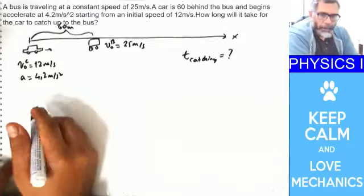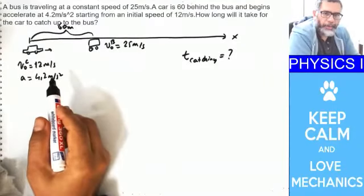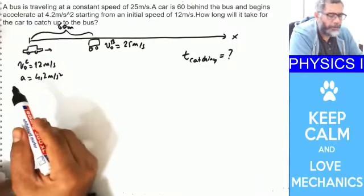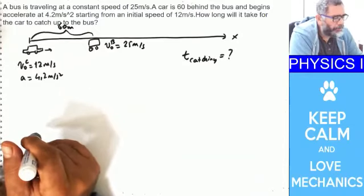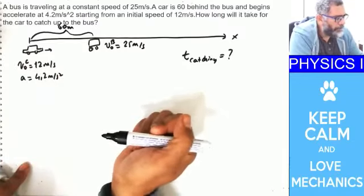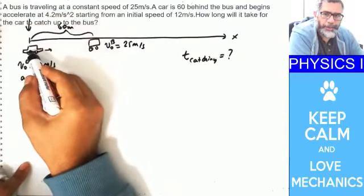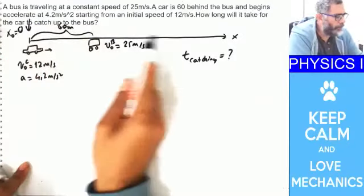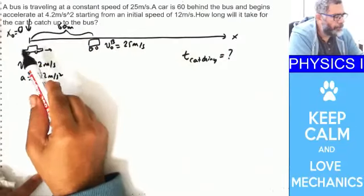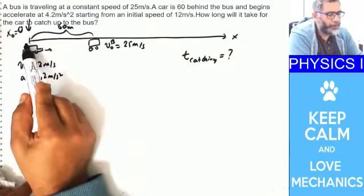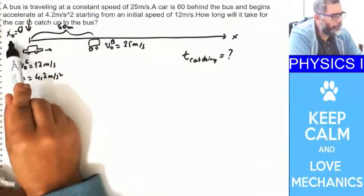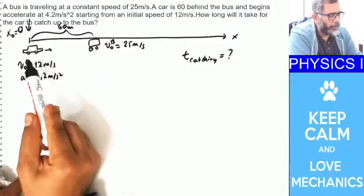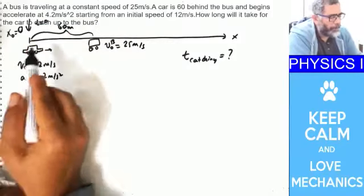The best way to start solving these questions with two objects is to write down the position of each object as a function of time. For example, take the initial position of the car to be zero. You have to set up a coordinate system — it's one-dimensional motion, so you just draw an x-axis, place your origin at the car's initial position, not the bus. At time t = 0 the car starts its motion.